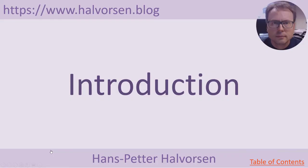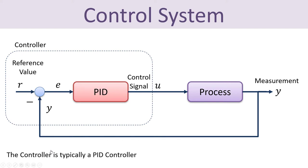So first, introduction. The Fuji PID controller is a PID controller used in industrial processes. We have a process and a PID controller, and the output of the process is sent back to the controller. We also have a reference value, and then the PID controller calculates the error between the reference value and the measured value, and based on that error it calculates a proper control signal that is sent to the process. This is a typical feedback system.